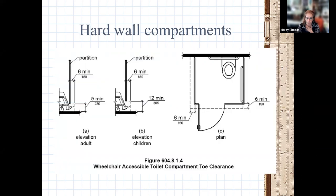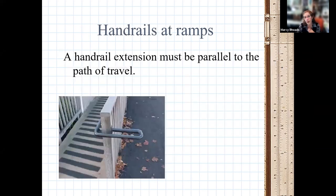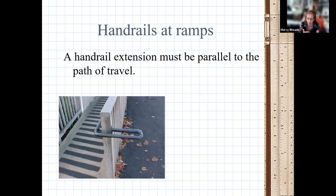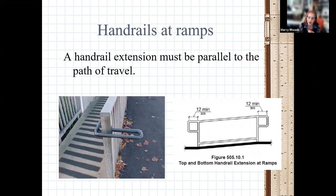Handrails at ramps must extend beyond the ramp parallel to the path of travel — 12 inches at both the top and bottom. Curving or angling the extensions is only permitted in existing conditions where it would be a hazard, not in new construction.